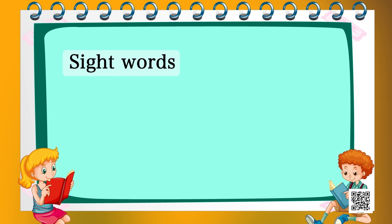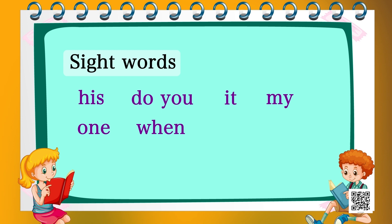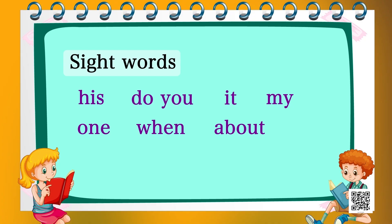Here are some words: his, do, you, it, my, one, when, about. Do you remember these words from the story? These are called sight words because they are very commonly used words that anyone can recognize easily just by looking at them.